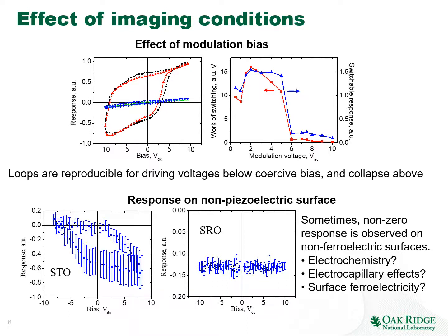An important caution: it is sometimes possible to observe PFM hysteresis loops on non-piezoelectric surfaces. For example, strontium titanate (which should be non-ferroelectric as a single crystal) shows a hysteresis loop, while strontium ruthenate shows none. Possible explanations include electrochemistry, electrocapillary effects from the tip-surface meniscus in ambient conditions, or physical mechanisms such as surface ferroelectricity in strontium titanate. The key message is that the mere presence of a hysteresis loop is not unambiguous evidence of ferroelectricity — other mechanisms can produce this behavior.